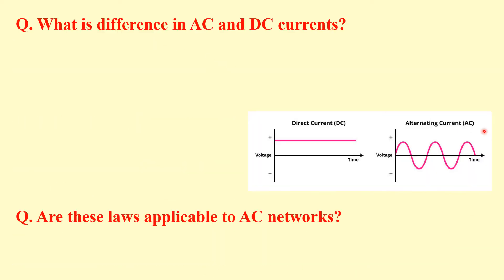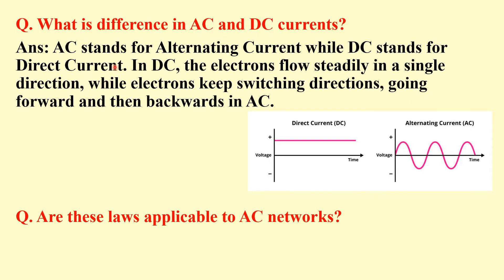The next question is: what is the difference between AC and DC currents? AC stands for alternating current while DC stands for direct current. In direct current, electrons flow in a single direction, while in alternating current, electrons keep switching directions — forward and backward. In DC, voltage is constant, whereas in AC, it varies like a sine wave.